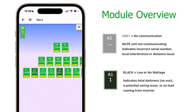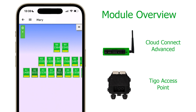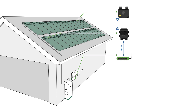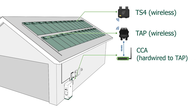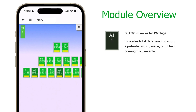Sometimes you may see a gray or black module. Gray indicates a communication issue between that module and the communication equipment, which typically includes the Tygo Access Point (TAP) and the Cloud Connect Advanced (CCA). This error is typically associated with loose wiring, bad wireless communication between the TS4s and the TAP, or a few other things discussed in the help center article. Black colored modules mean the power output is very low or non-existent, which is common if you view your system at night. In extreme cases, it could mean a potential PV module wiring issue.